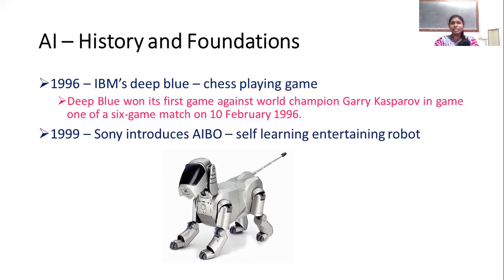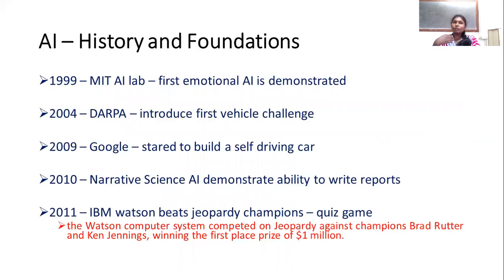In 1999, Sony developed a self-learning entertaining robot that could improve and demonstrate emotions — if it felt happy, it would feel and respond. It could move, talk, and demonstrated emotional AI — developing emotions in a machine.